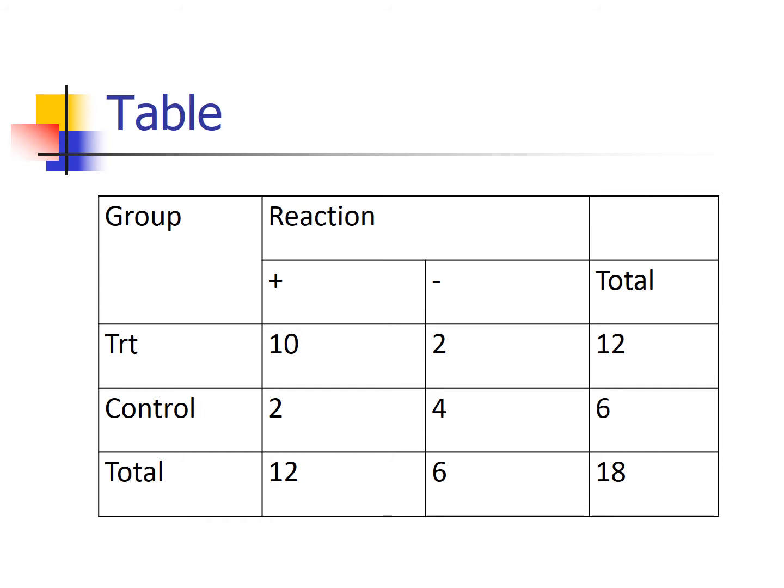How do I know which of these four cells is going to have the smallest expected cell count? The expected cell count is the row total times the column total over the overall total. So I look for the smallest row total — that's row two with a row total of six — and the smallest column total — that's column two with a column total of six. That means the bottom right cell, which has the number four, will have the smallest expected cell count.